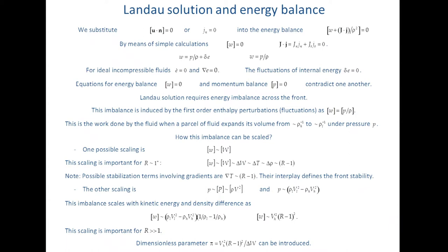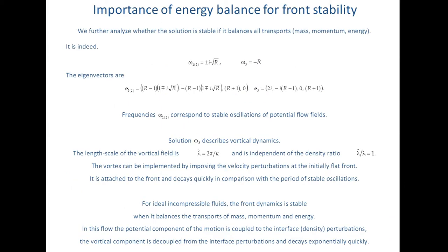If you try to see what kind of scaling can be applied to quantify this energy imbalance, there are two possible mechanisms. One is a traditional scaling where the enthalpy perturbation scales as zero variance of the enthalpy — accounting for delta omega large being proportional to delta T and essentially proportional to delta in the density ratio, something on the order of R minus 1. On the other hand, we might apply a scaling associated with the pressure, in which case our jump in enthalpy may be scaled with the kinetic energy. To see the importance of energy balance for front stability, we may further analyze the conserved system, which balances all transport including mass, two components of momentum, and energy.